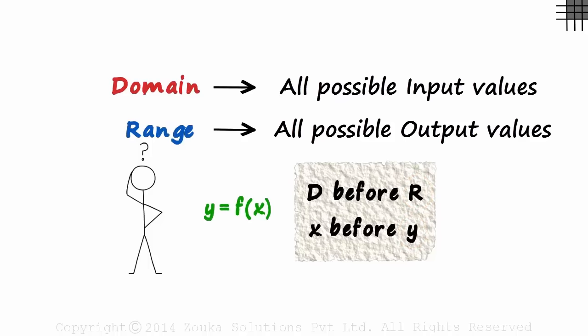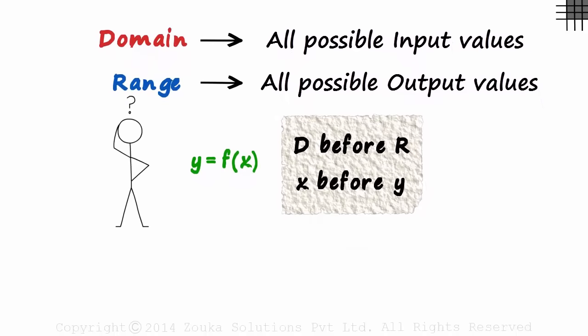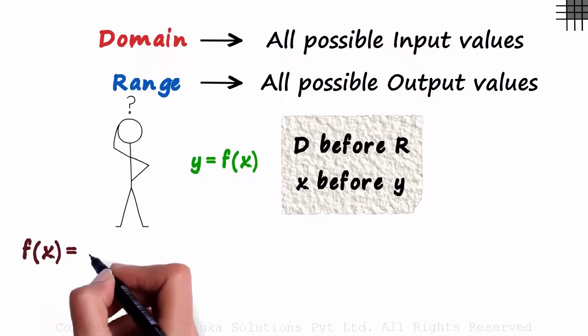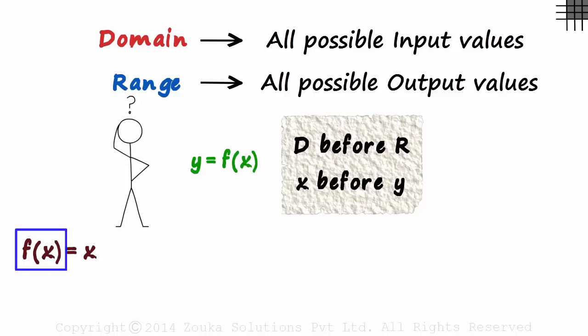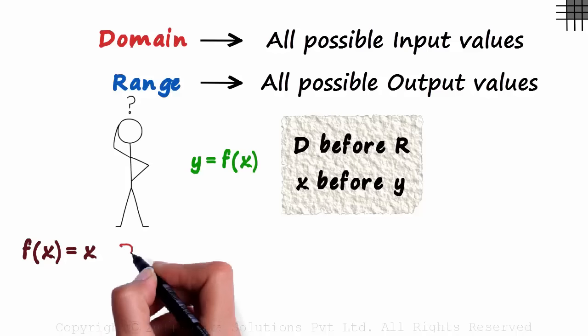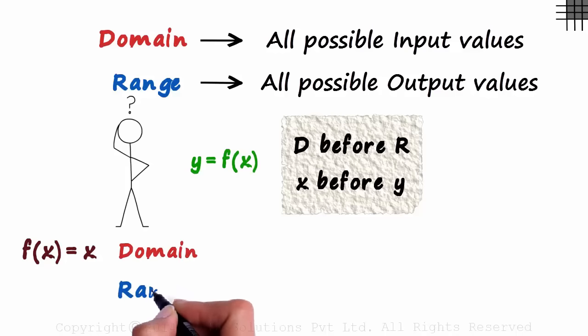Shall we try out a few examples now? The first function is f of x is equal to x. This function will simply give out the value it takes as the input. Instead of saying it does nothing, a better way of saying it would be the function multiplies the input by 1 and gives an output. Anyway, coming to the point, what will be the domain and the range of this function? Domain will be all the values x can take. In this function, x can take any value.